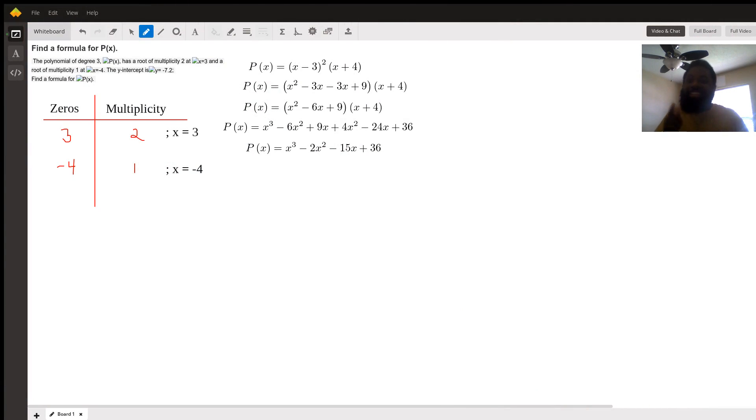Good afternoon. Today we will be finding a polynomial P(x) of degree 3 giving a root of x equals 3 as a multiplicity of 2 and a root of x equals negative 4 with a multiplicity of 1.